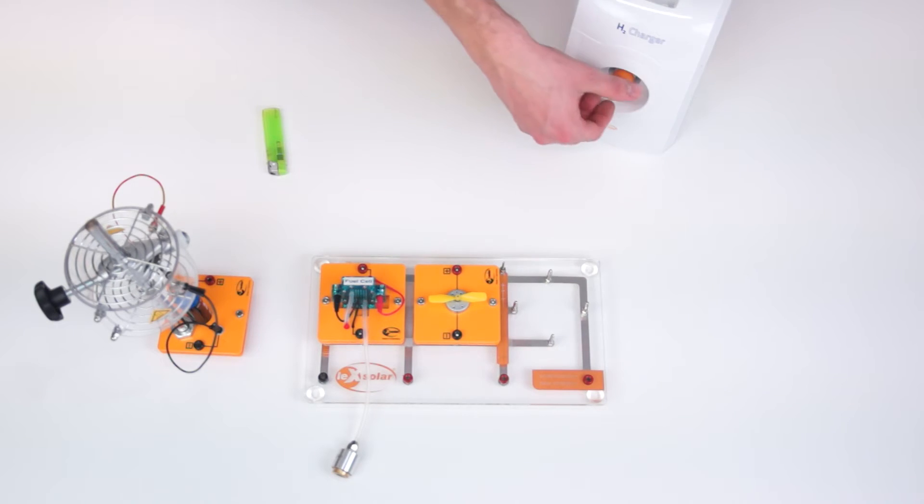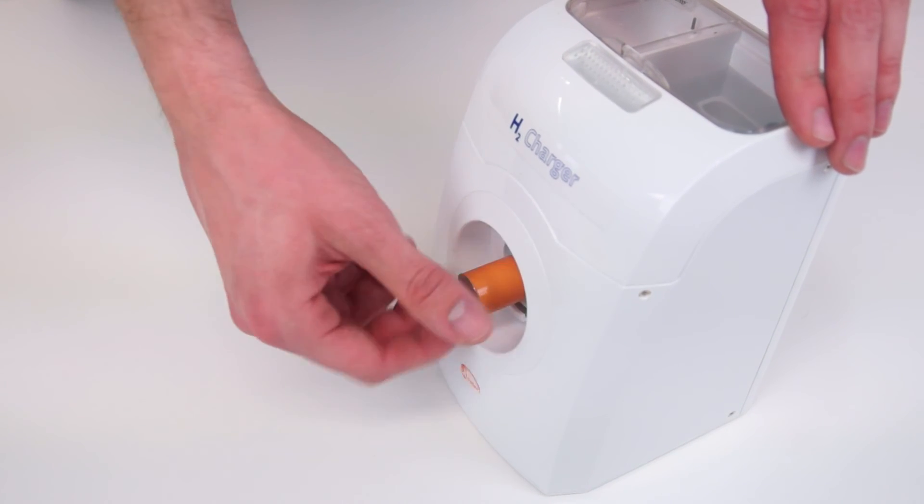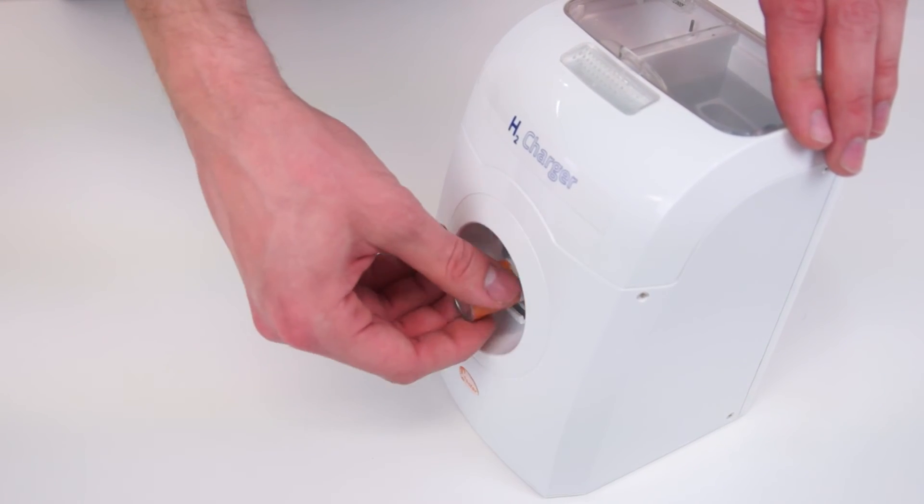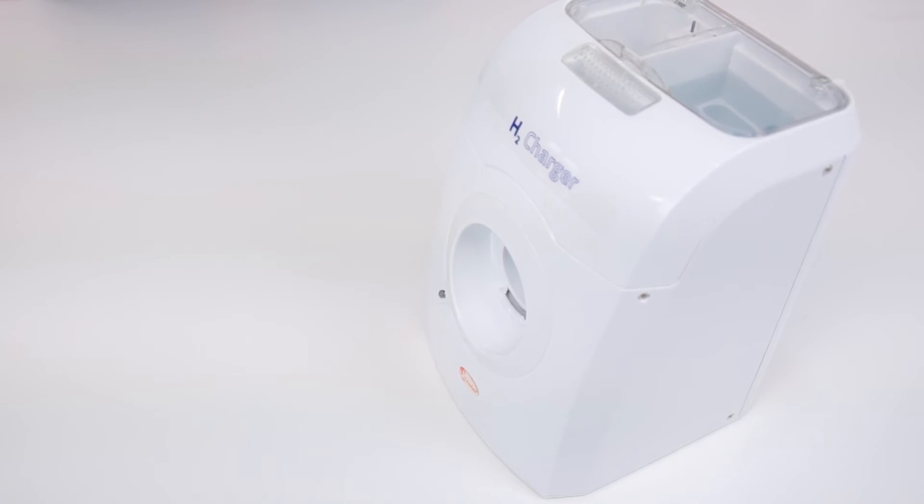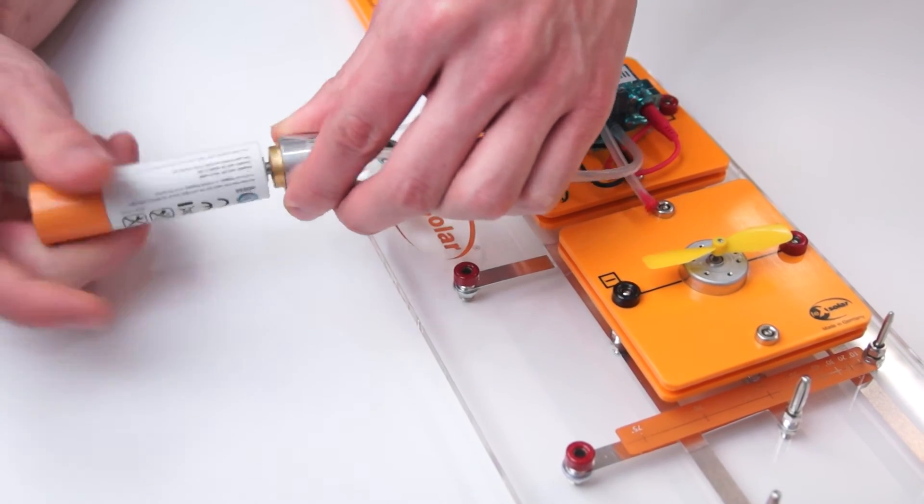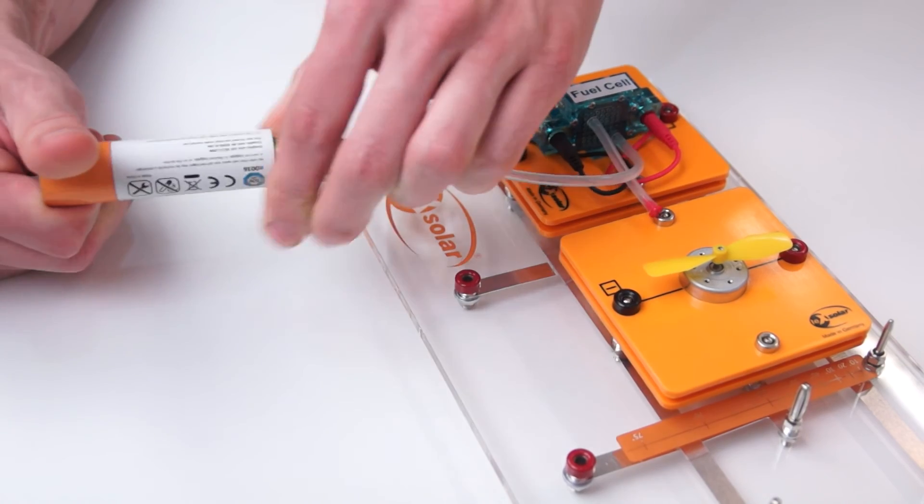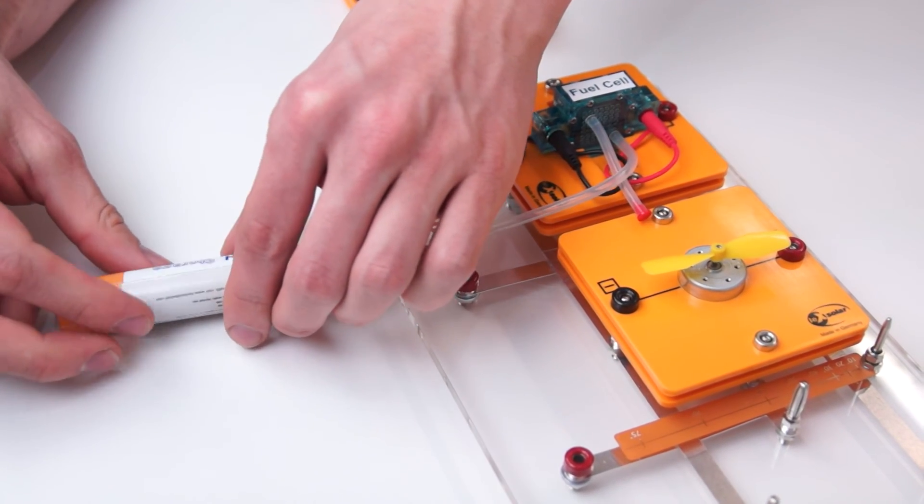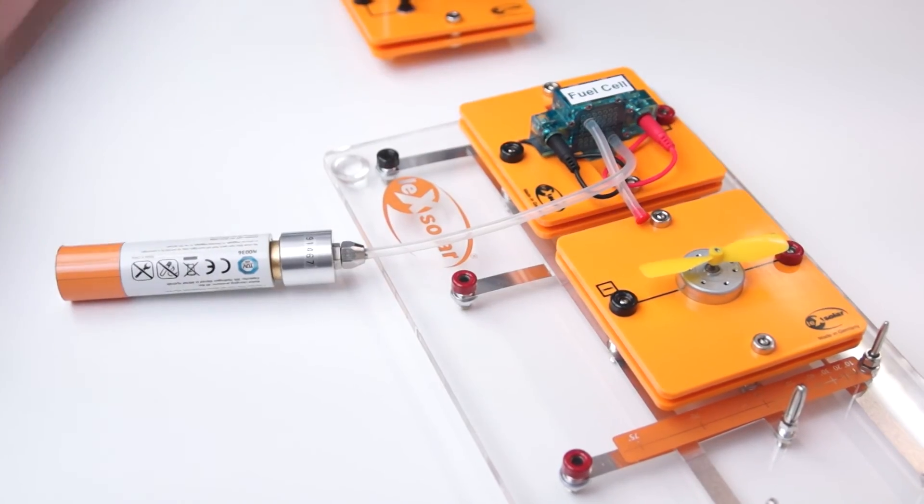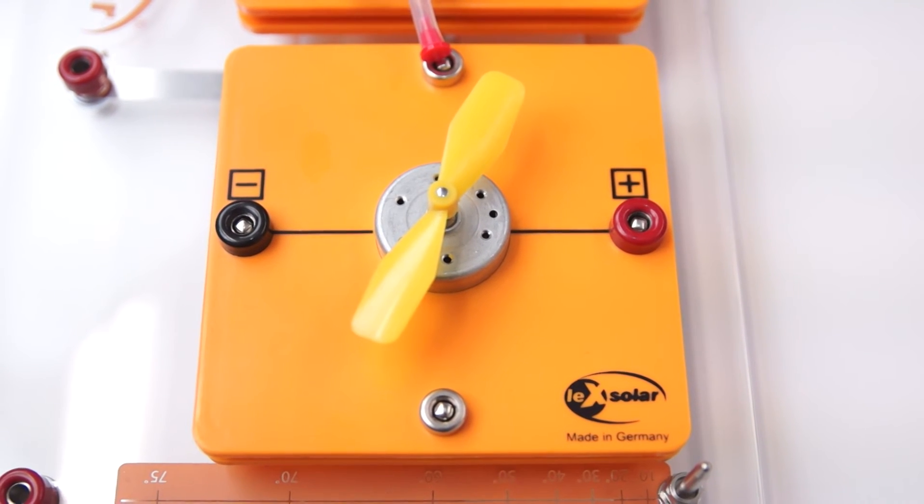We take the storage out of the charger and screw it to the other side of the valve. With the hydrogen from the tank and the oxygen in the proximity the conversion to water begins in the fuel cell. Electrons flow again through an external circuit and can operate a consumer. After a short time the motor also starts to rotate.